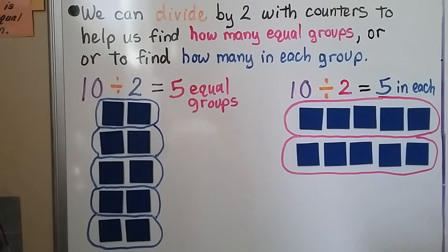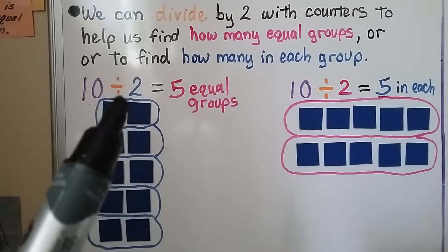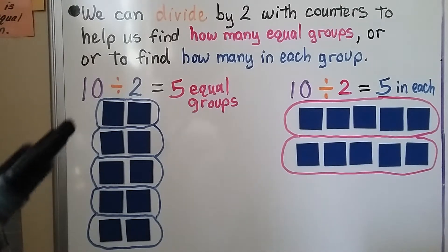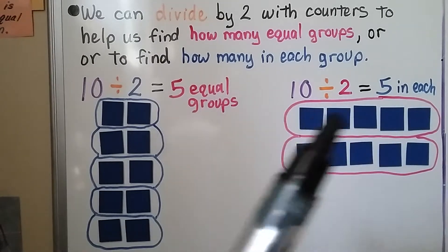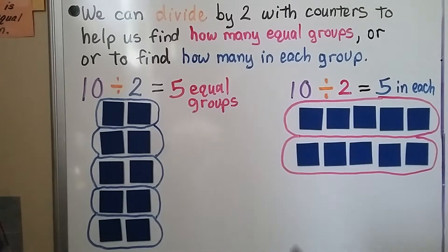We can divide by 2 with counters to help us find how many equal groups, or to find how many in each group. We have 10 counters and they're divided into 2 in each group. We have 5 equal groups with 2 in each group. Here we have 10 counters divided into 2 groups — we have 5 in each group.